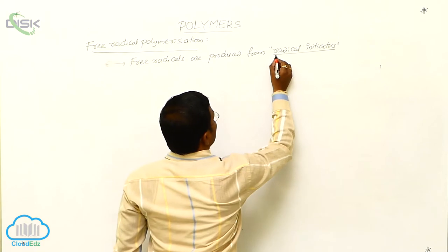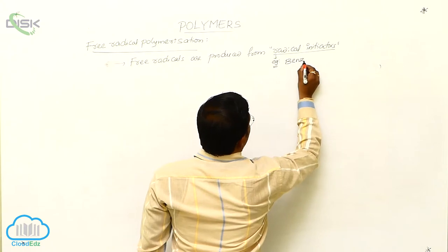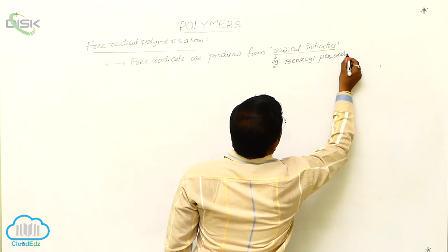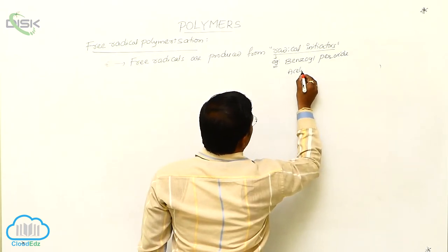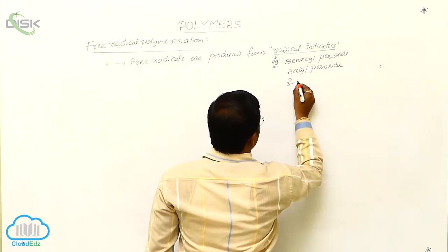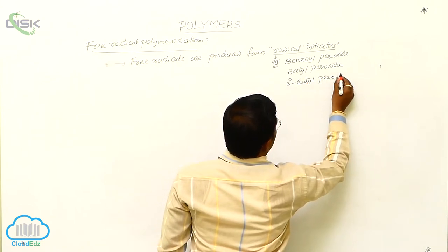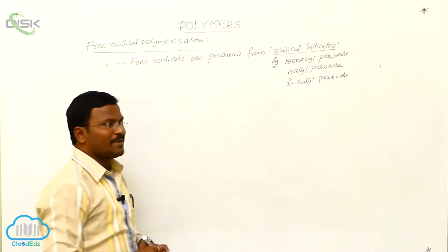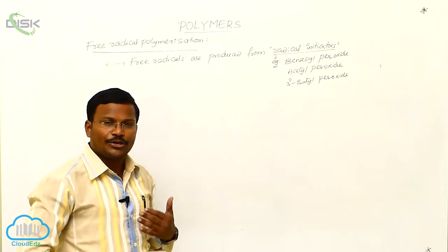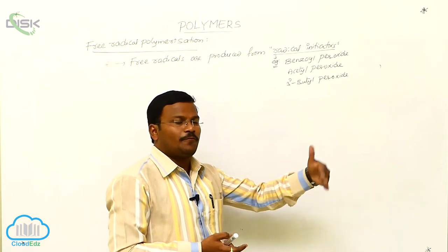Examples of radical initiators are benzoyl peroxide, acetyl peroxide, and tertiary butyl peroxide. These three chemical substances are termed as radical initiators. What they generally do is promote homolytic cleavage of bonds to produce free radicals.